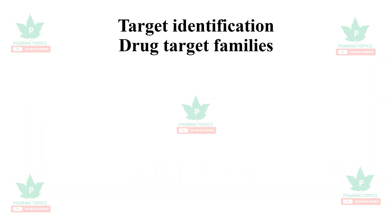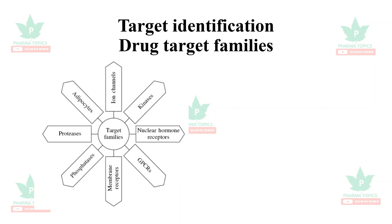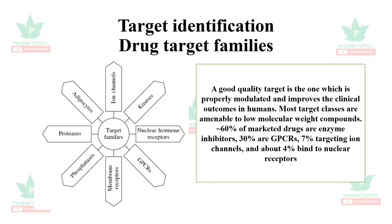The drug target families include ion channels, kinases, nuclear hormone receptors, G protein-coupled receptors, membrane receptors, phosphatases, proteases, and numerous others. A good quality target is one which is properly modulated and improves the clinical outcome in humans. Approximately 60% of marketed drugs are enzyme inhibitors, 30% are G protein-coupled receptor targeting drugs, 7% target ion channels, and roughly 4% target nuclear receptors.